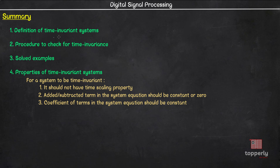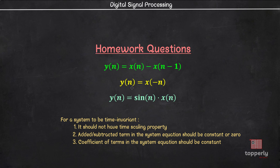To sum up this lecture, we learned the definition of time-invariant systems, the procedure to check for time invariance, and the three properties of a time-invariant system through solved examples. I would like to give you some homework questions — check the time invariance of the given systems using the three properties we learned. Remember that for a system to be time invariant, it must satisfy all three conditions. If it satisfies just two but fails one, the system is not time invariant. You can also verify using the full procedure from the video, and please comment your answers to help others.